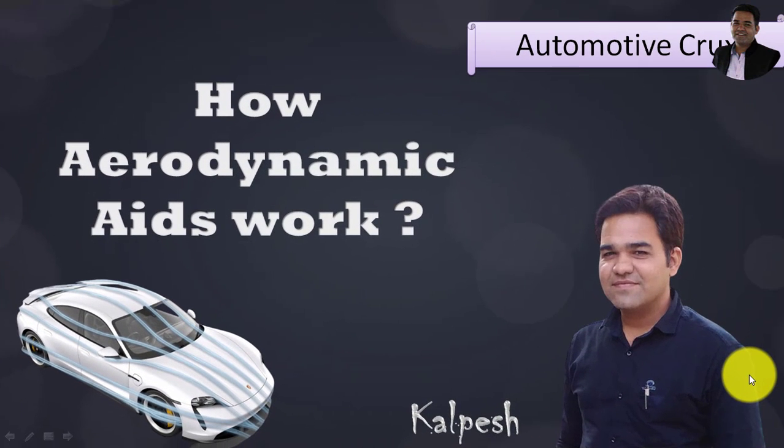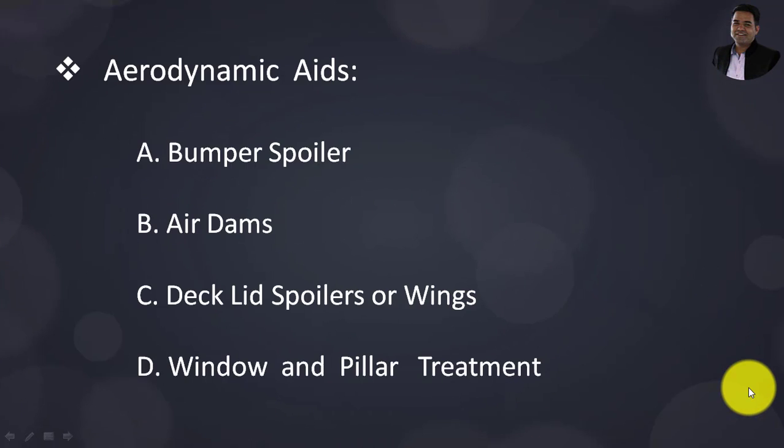As I said, in this video I will discuss four aerodynamic aids. They are: bumper spoilers, air dams, deck lid spoilers (also known as wings), and window and pillar treatment. Let's check out each one step by step.